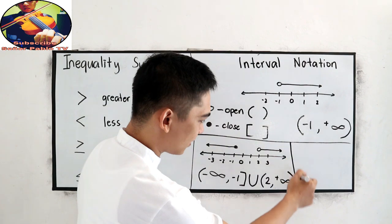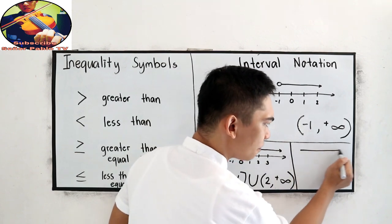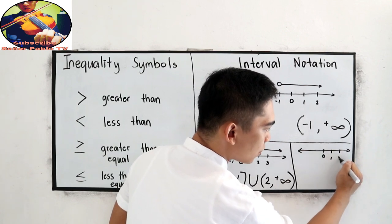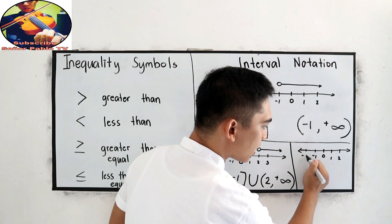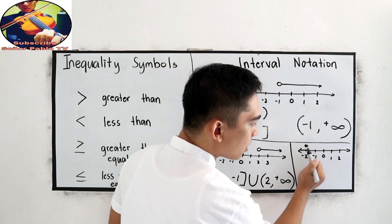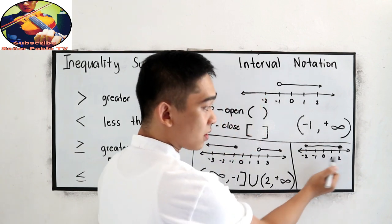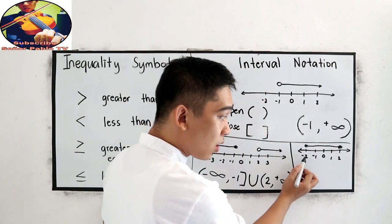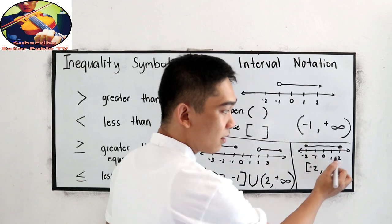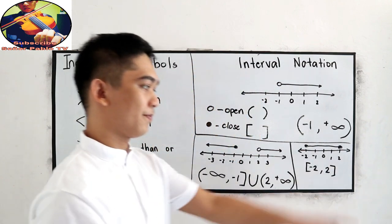Another example. What if we have a number line with 0, 1, 2, negative 1, negative 2, and your inequality is closed at negative 2 going to closed at positive 2? Since we are closed at negative 2 and also closed at positive 2, we write: close bracket, negative 2, comma, positive 2, close bracket.